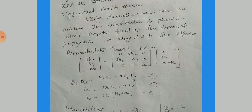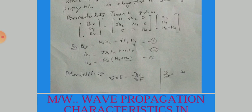Now solving these equations, we can calculate: Bx = μ₁·hx − jμ₂·hy. Similarly, By = jμ₂·hx + μ₁·hy. And lastly, Bz = μ₀ multiplied by (hz + H₀).